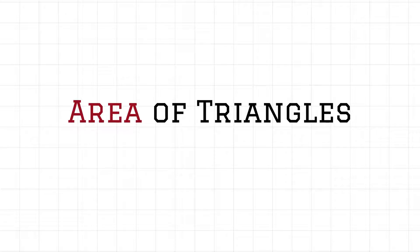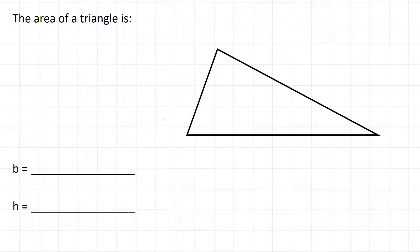Next up, let's review the area of triangles. The area of a triangle depends on two things: its base, that's given by a lowercase b, and its height, lowercase h.